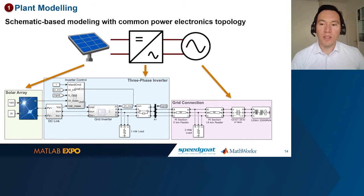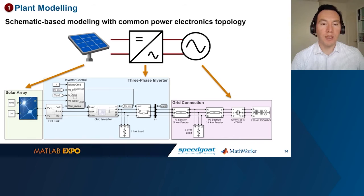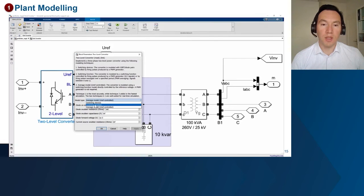We start by creating a model of the electrical circuit. We'll be using a solar array with over 600 panels connected via DC-Link to a grid-tied inverter with a harmonic filter. This inverter will be connected to the grid via relay, and the grid will include a transmission line.